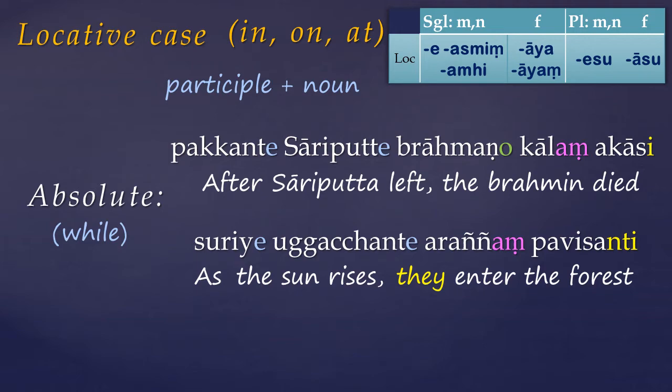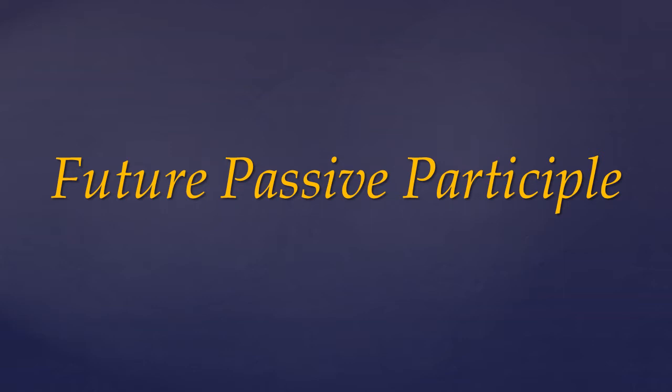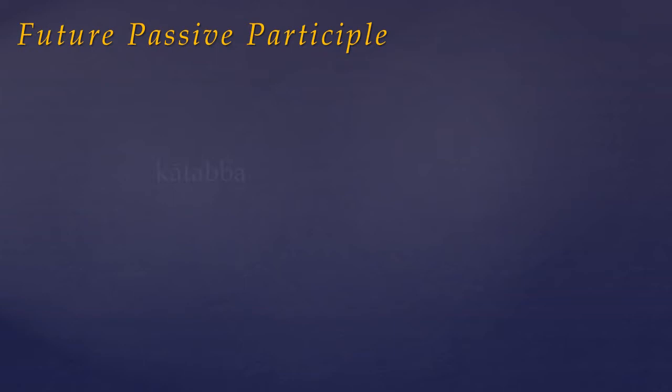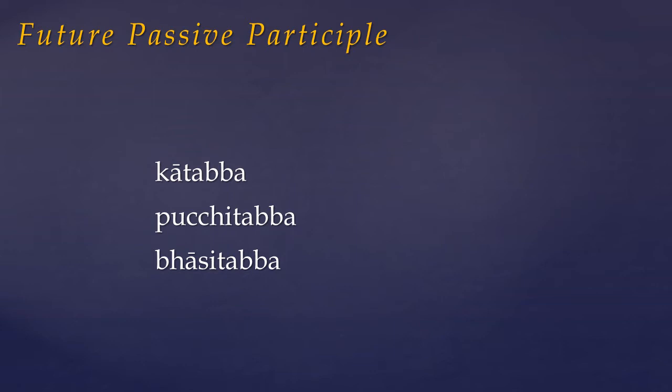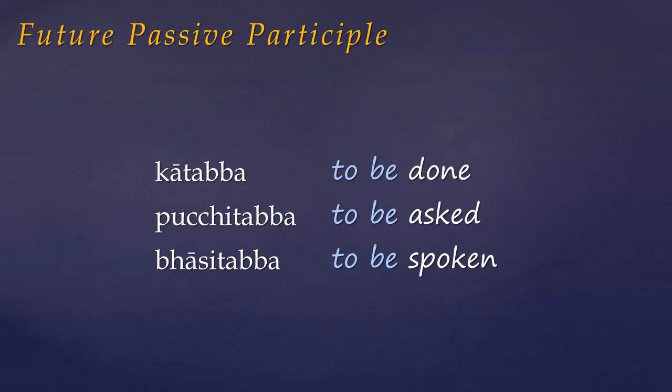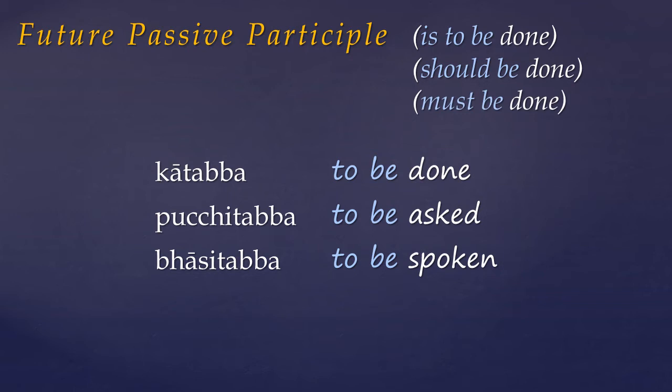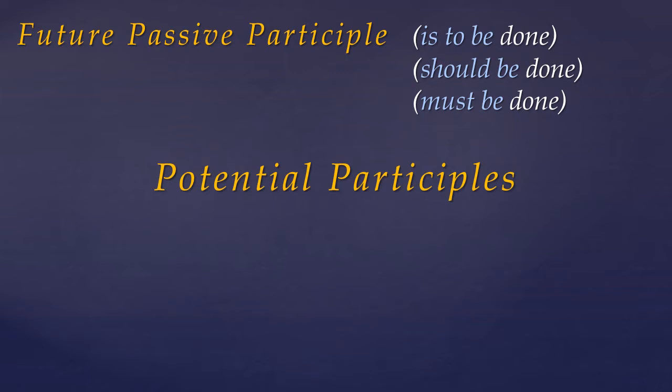Moving on to the future passive participle. Although less frequent, this verbal adjective has many of the characteristics of the past participle, being used mainly in passive voice sentences. There's no true equivalent to the future passive participle in English; the closest translation is a passive infinitive, such as to be done, to be asked, to be spoken. Although called future passive participles, rather than simple future, they imply a sense of potential mixed with obligation: this is to be done, this should be done, or this must be done. So sometimes they're also termed potential participles, and often gerundives, as they correspond to gerundives in Latin.